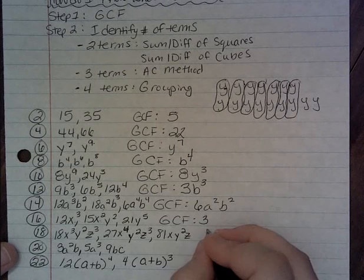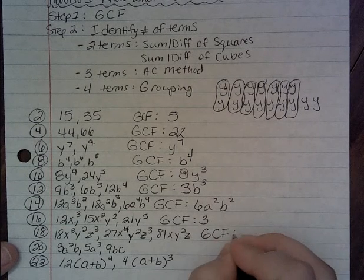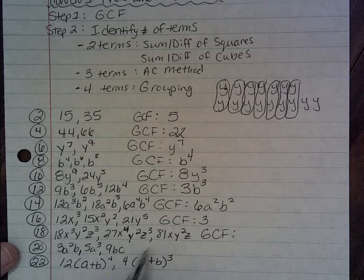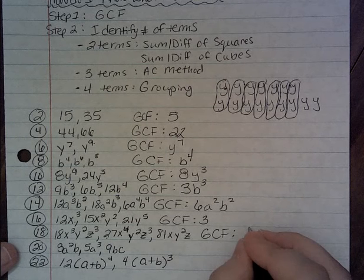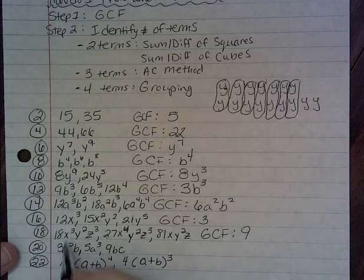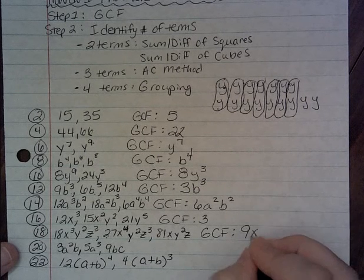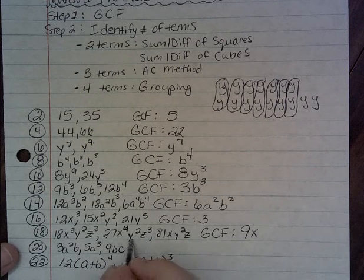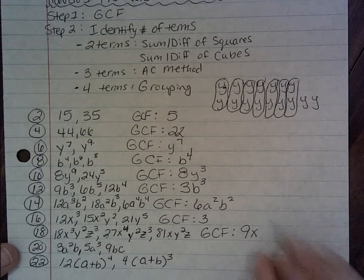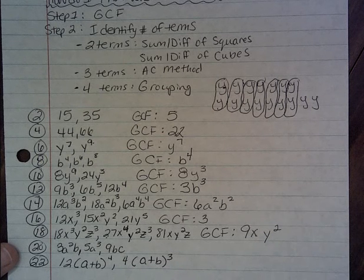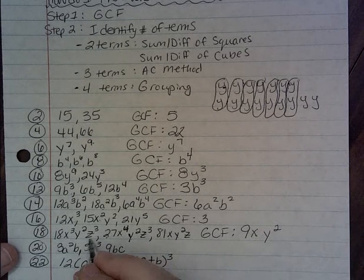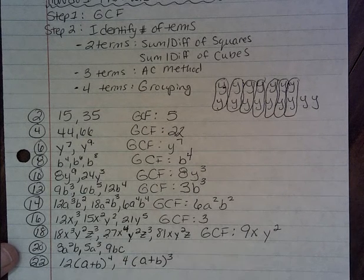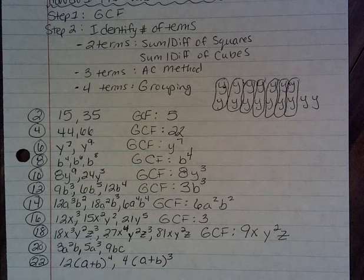On number 18, between 18, 27, and 81, the greatest common factor is 9. You've got x to the 3rd, x to the 4th, and just x — understood to be x to the 1st — so that's the smallest number of x's. You've got y squared, y squared, and y squared, so you can take out all those y squareds. For z's: z to the 3rd, z to the 3rd, and just z. So the greatest common factor here is 9xy squared z.